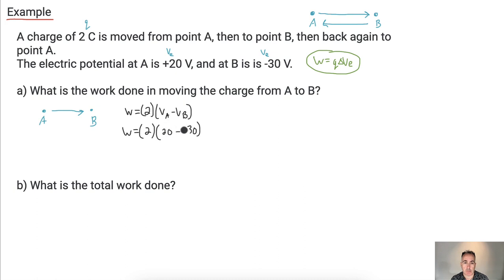It's 20 minus negative 30. It's really important to get that part right. And what's 20 minus minus 30? That's like saying 20 plus 30. So that ends up being 50. So I have W equals two times 50, which equals 100. So in the end, I can conclude that W equals 100 joules. So there we go. That was easy-ish. The key thing for these ones is just decoding the question.